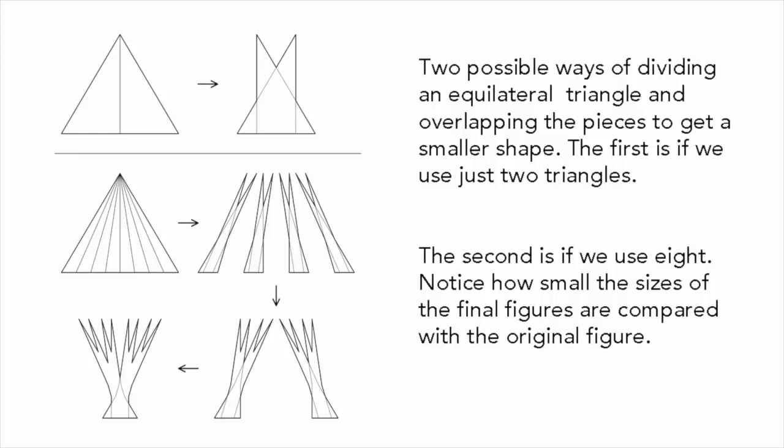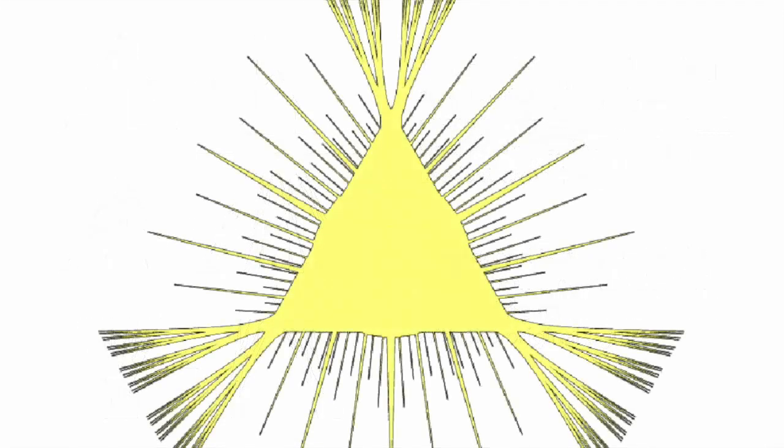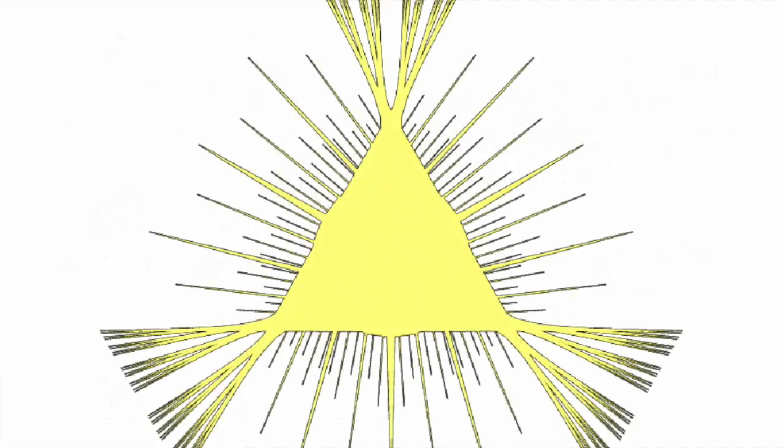The branches of the tree can also be connected to each other, again using an arbitrarily small area. A single tree like this allows Kakeya's needle to rotate through 60 degrees, so that gluing three of them together enables a 180 degree rotation.